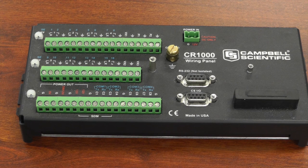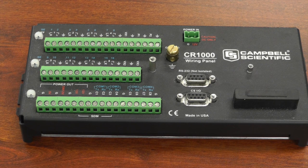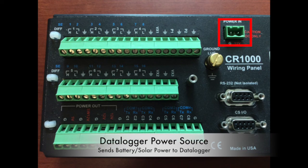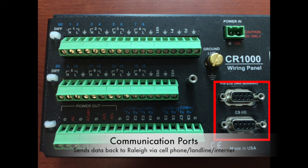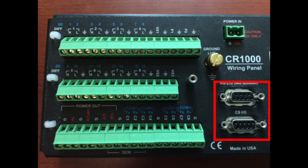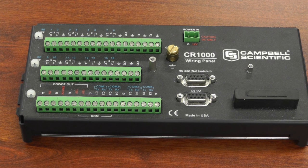All of our sensors go into the CR-1000, and it measures data every one minute. There are a number of channels and ports you need to understand before you go out to a station and rewire a sensor. The data logger includes a power source at the very top, two ports — an RS-232 port and a CSIO port — a grounding lug which keeps all the equipment safe from lightning, and a bunch of channels located on the left side.